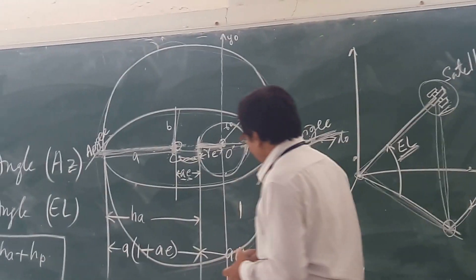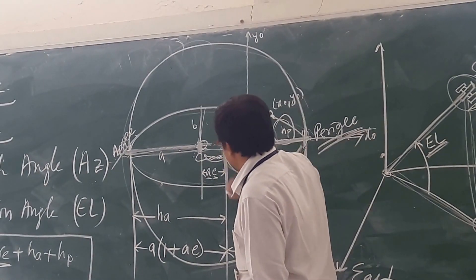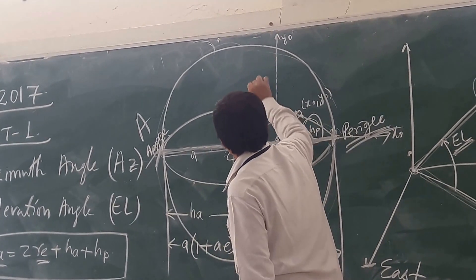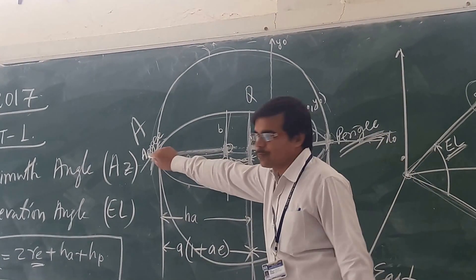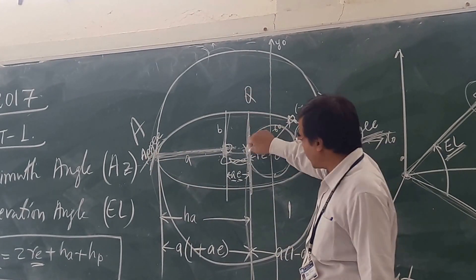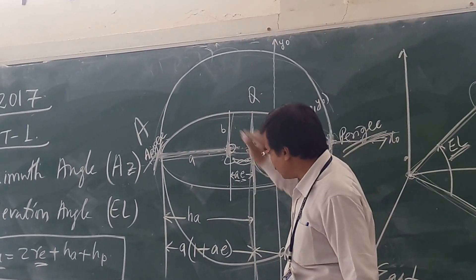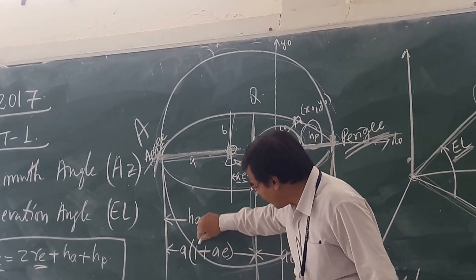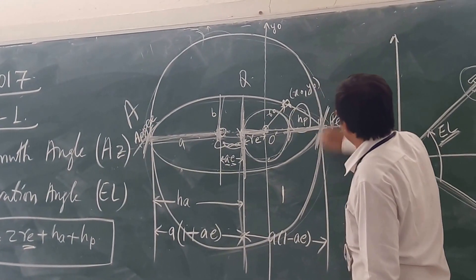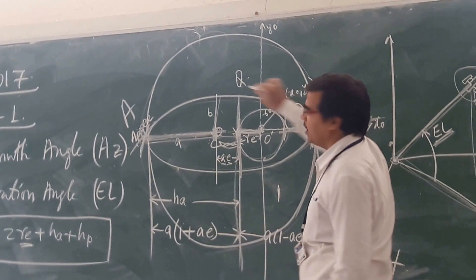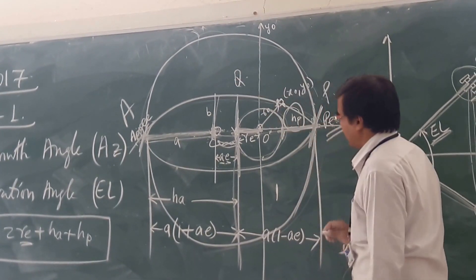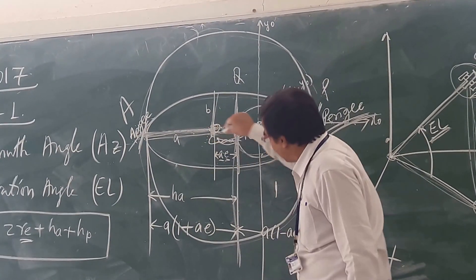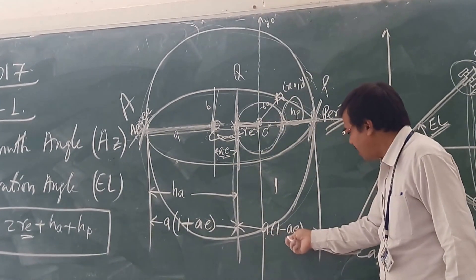One more thing: suppose if I am considering this distance — let us assume this is your point A and this is some other point Q. So, this AQ will be equal to a plus ae, that will be a(1 + e). And similarly, if this is your point P, the distance PQ — from here to here it is a, from here to here it is a — so it is a minus ae, giving you a(1 - e).